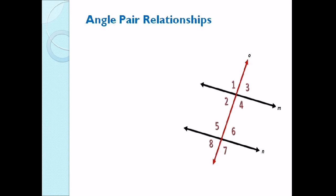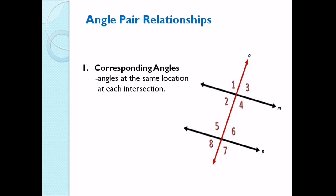Now let us identify the angle pair relationships. We will use the illustration. The first one is corresponding angles. When we say corresponding angles, these are angles at the same location at each intersection. Let us name those corresponding angles: angle 1 corresponds to angle 5. That is our first pair of corresponding angles.